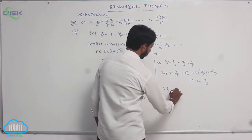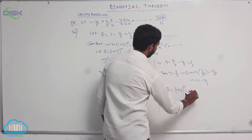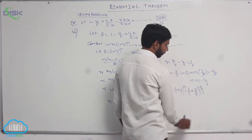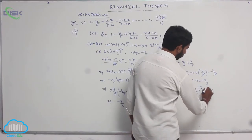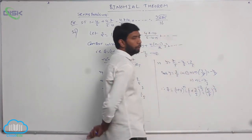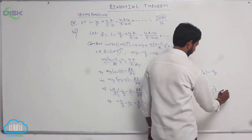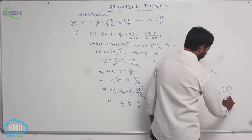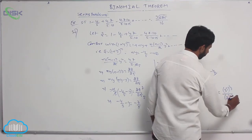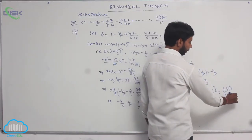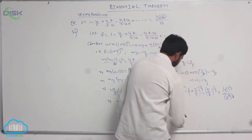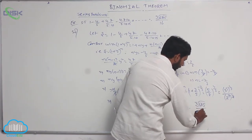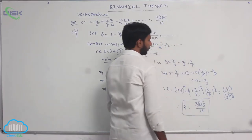Therefore, S = (1+y)^n = (1 + 3/5)^(-4/3) = (8/5)^(-4/3) = (5/8)^(4/3). This can be written as [5^4]^(1/3) / [2³]^(4/3). Here the 3s cancel, giving 5^4 = 625 and 2^4 = 16. Therefore S = cube root of 625/16.